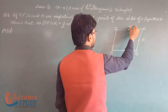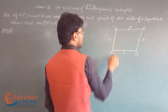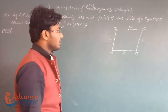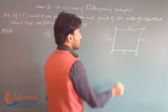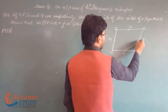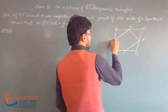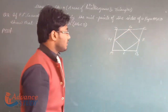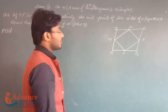G is the midpoint of AD, H is midpoint, and EFGH forms a figure inside the parallelogram. EFGH is half of the parallelogram ABCD — that is what we need to prove.